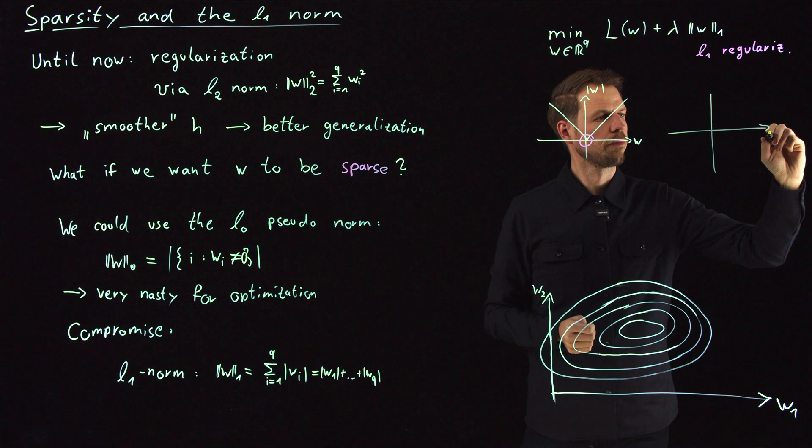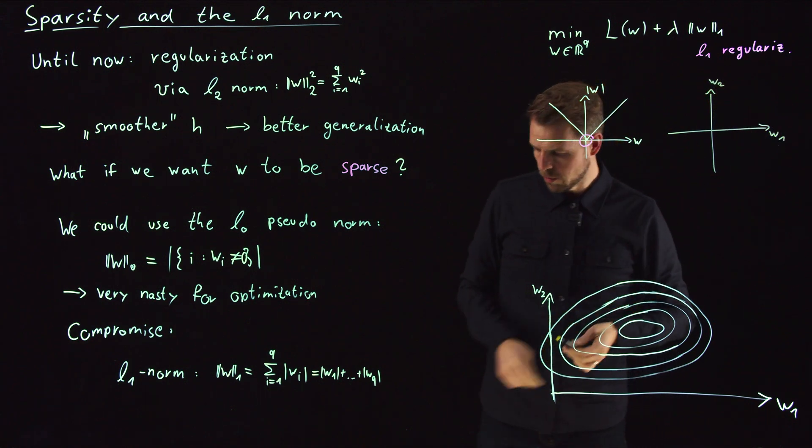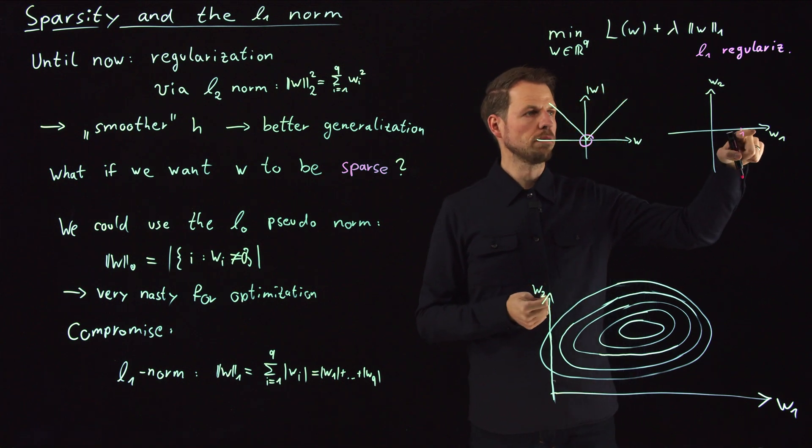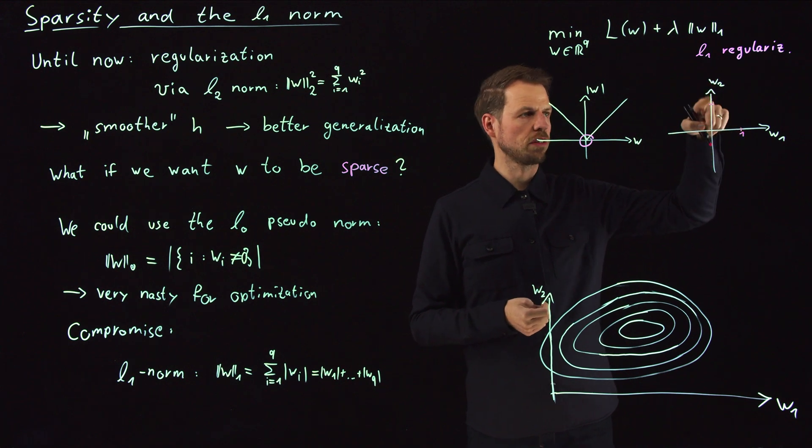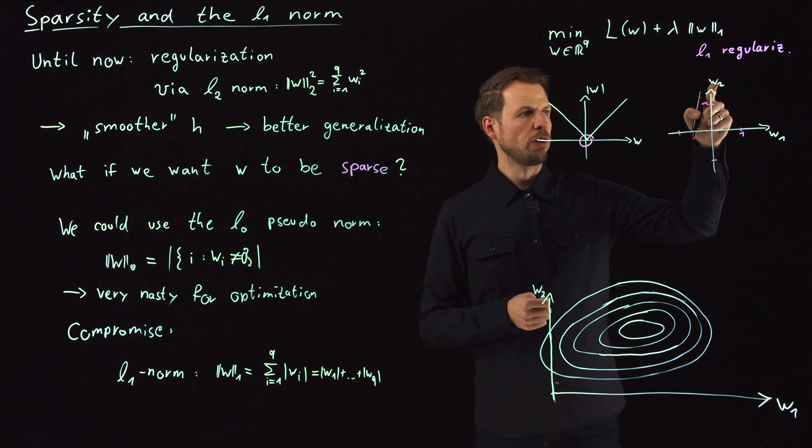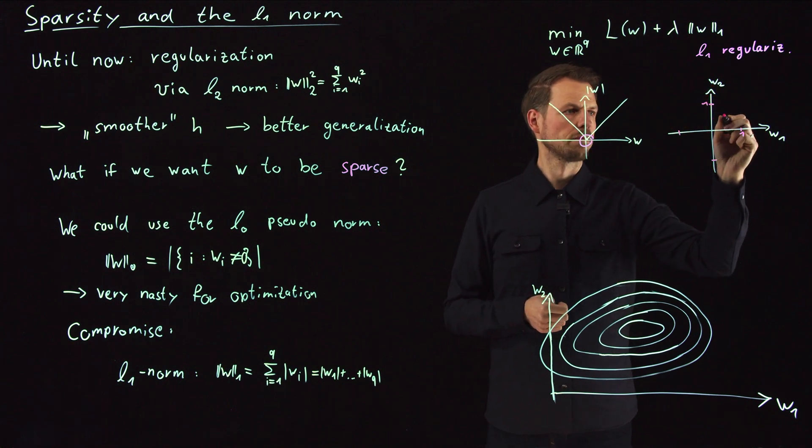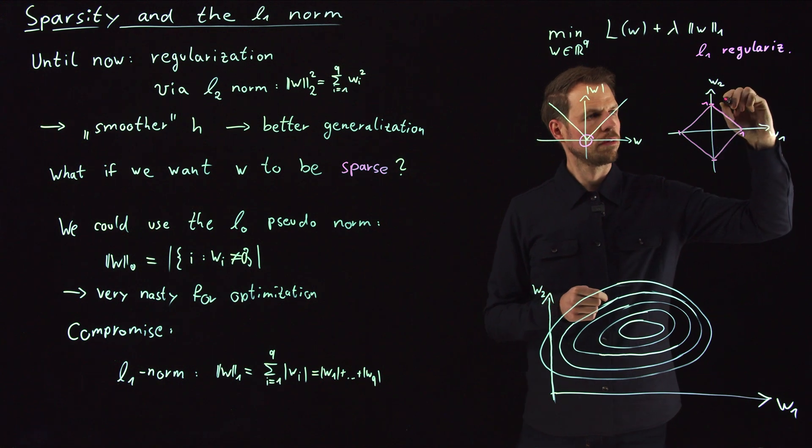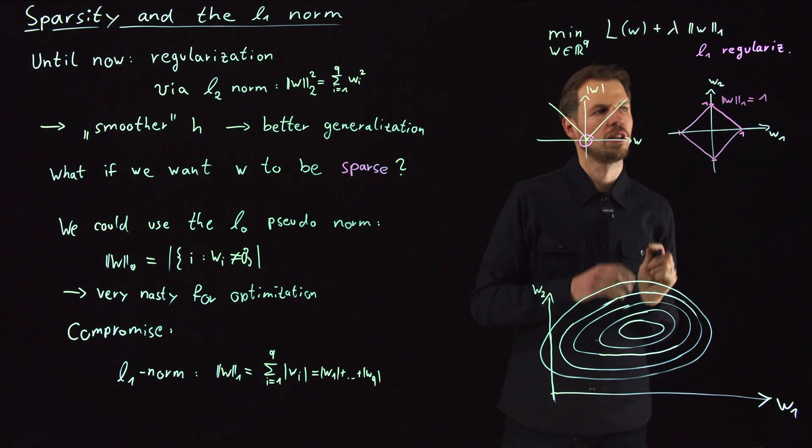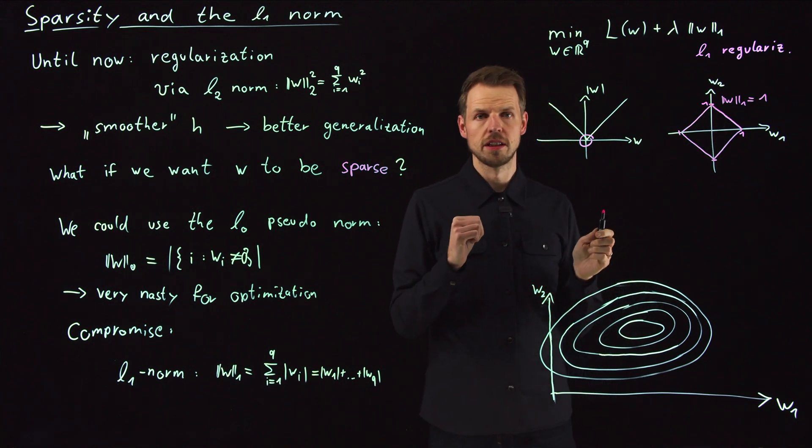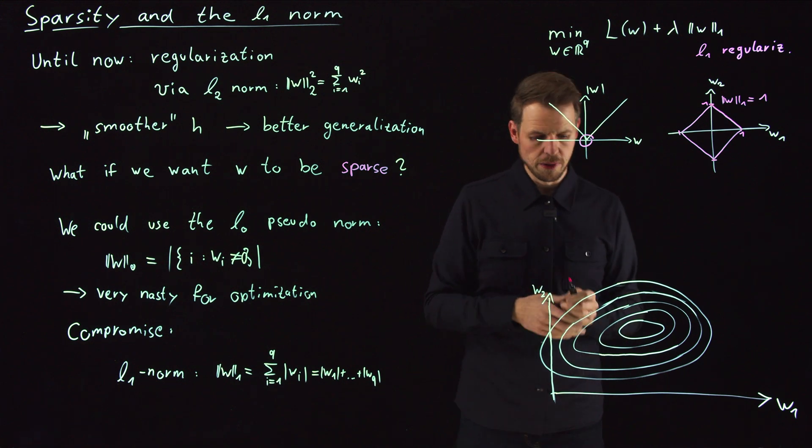Now, if we have two parameters. And I'm going to draw now the line where the norm is exactly 1. So if one weight is 1, this norm would be 1. Same here. If the second weight is 1, the first one is 0, this gives you 1. And the same holds true for this one. And the same holds true for this one. And if you have 0.5 and 0.5, this will also give you a sum of 1. And so if you think about this a little longer, you will find that the level set where this one is 1 is actually a square rotated by 45 degrees. And so this is actually why sparsity will be enforced by this.